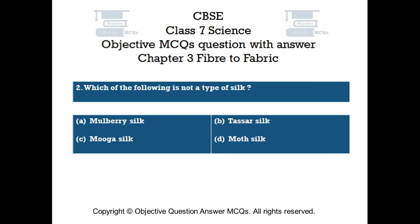Question number 2. Which of the following is not a type of silk? Option A Mulberry Silk, Option B Tassar Silk, Option C Mugga Silk, Option D Moth Silk.